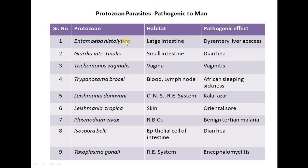These are protozoan parasites pathogenic to man. Entamoeba histolytica — habitat: large intestine; causes dysentery and liver abscesses. Giardia intestinalis — habitat: small intestine; causes diarrhea. Trichomonas vaginalis — habitat: vagina; causes vaginitis. Trypanosoma brucei — habitat: blood and lymph nodes; causes African sleeping sickness. Leishmania donovani — habitat: central nervous system and reproductive system; causes kala-azar.